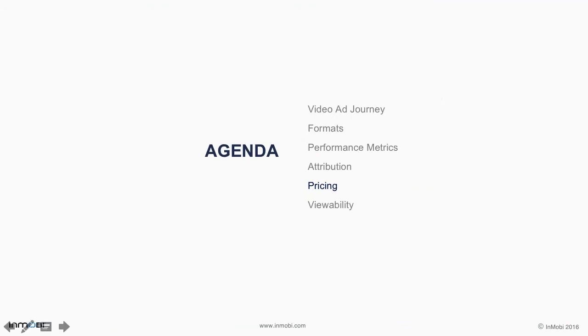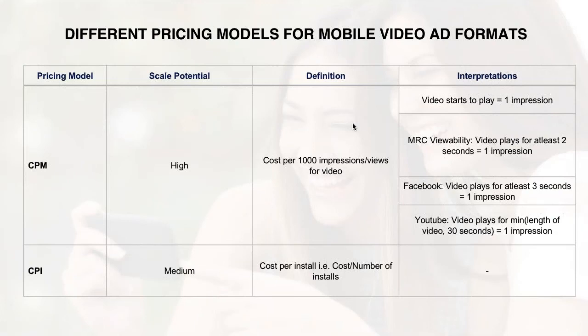Let's move on to the different pricing models that advertising partners offer for videos. CPM or cost-per-mille is a pay structure designed to generate brand awareness — the advertiser pays the publisher for every thousand times the advertisement is displayed. This CPM pricing model is about massive scalability. CPM is particularly effective when you have high-performing creatives, as the cost of each action will go down as the total number of actions taken goes up. In short, the better your campaign performance, the more bang for your buck.